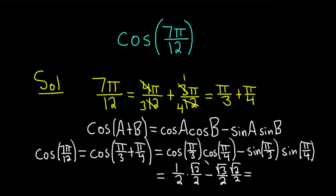This is equal to, 1 times the square root of 2 is the square root of 2. And then the square root of 3 times the square root of 2 is the square root of 6. And we can write this all over 4 because 2 times 2 is 4.